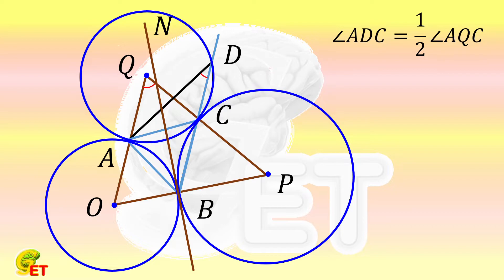Then according to the alternate segment theorem, the angle ABN is equal to half of the angle AOB. Angle CBN is equal to half of angle CPB.